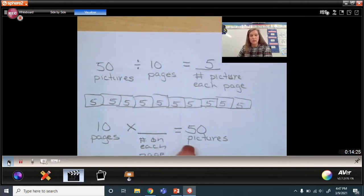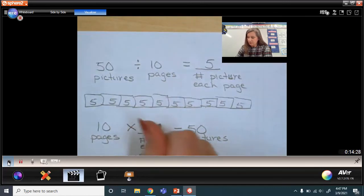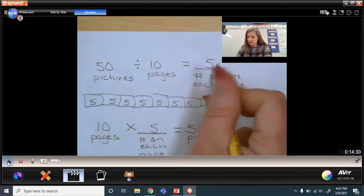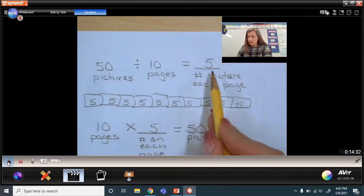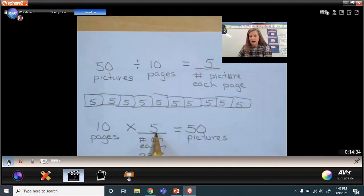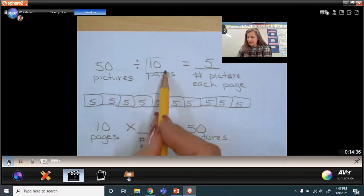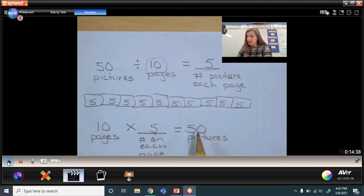Now, I can check using multiplication because these are supposed to match. This is the quotient. The quotient is going to be one of our factors, right? The divisor is going to be one of our factors. The product is going to be our dividend here.